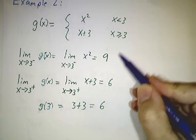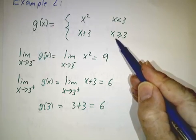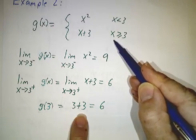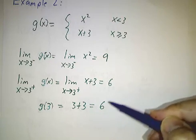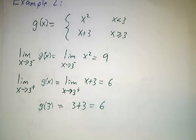The limit from the right, we use this formula, and we get 6. The value of the function, we use this formula, and we get 6. 9 and 6 are not the same, it's not continuous.